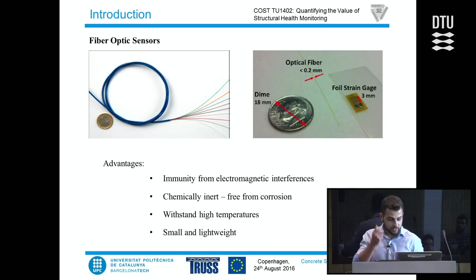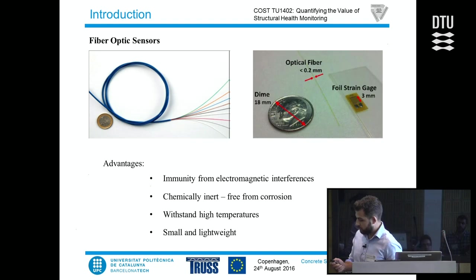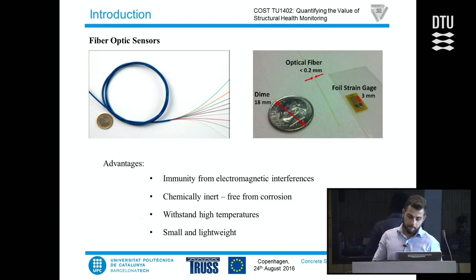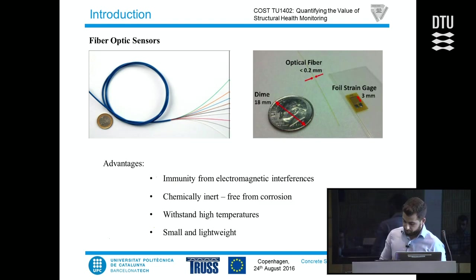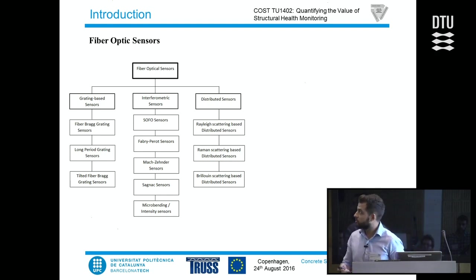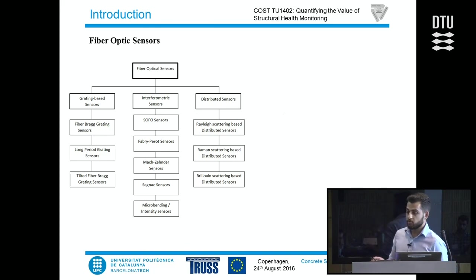Fiber optic sensors present a lot of advantages when compared with more traditional electric sensors. Some of them are represented here, but I want to pinpoint the fact that they are immune from electromagnetic interference, so they allow us to obtain very noise-free data, and also that they are very small and lightweight so they are very easy to install and operate. There are several different ways of categorizing fiber optic sensors, but for the purpose of this presentation we decided to sort them into three different categories: grating-based sensors, interferometric sensors, and distributed sensors.